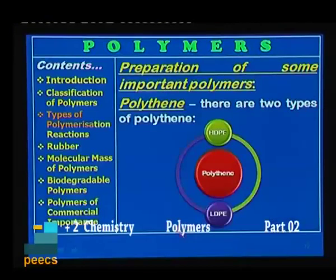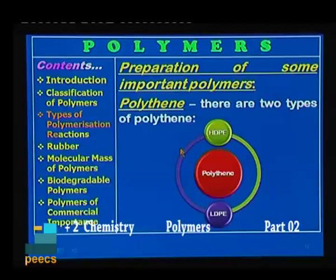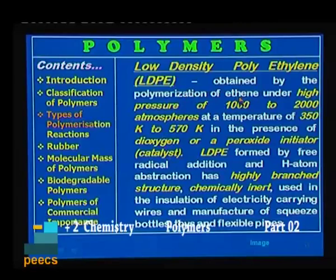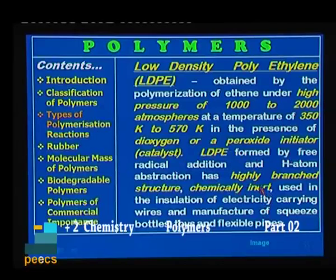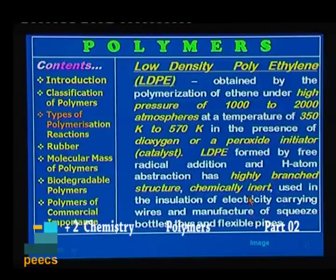Next is preparation of some important polymers. First is polythene — it is an addition polymer formed by the addition of ethylene molecules. There are two varieties: HDPE (high density polyethylene) and LDPE (low density polyethylene). Low density polyethylene is obtained by the polymerization of ethylene under high pressure of 1000 to 2000 atmospheres and at a temperature of about 350 K to 570 K in the presence of dioxygen or a peroxide initiator catalyst.